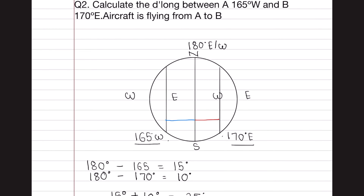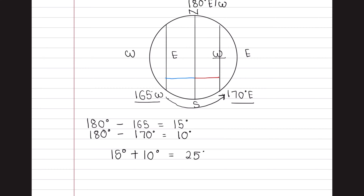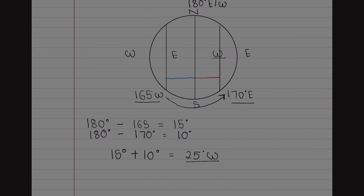Since the aircraft is flying from point A to B, which is in this direction, the longitude here is West. So the answer will be 25 degrees West.